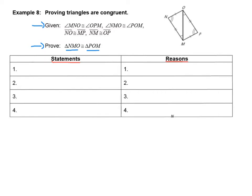The first thing I want to do is review my given information. They tell me MNO is congruent to OPM — marked in my picture with two little arcs in those corners. They tell me NMO is congruent to POM, with a single little arc. Then for side lengths: NO is congruent to MP, with one tick on each, and MN is congruent to OP, with two ticks on each.